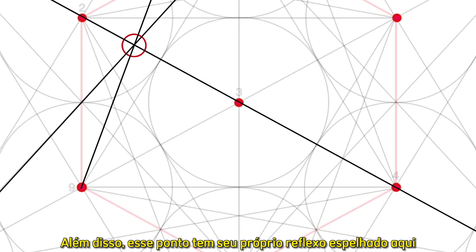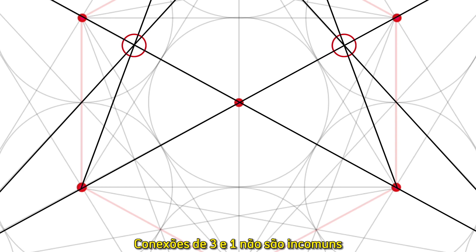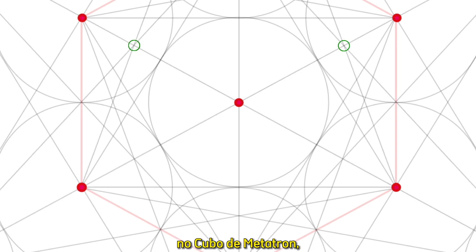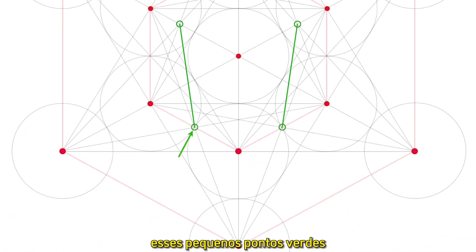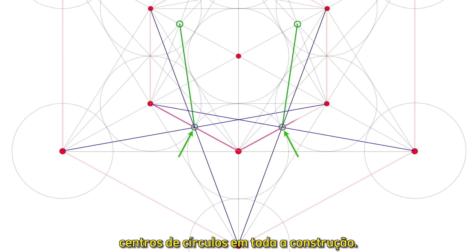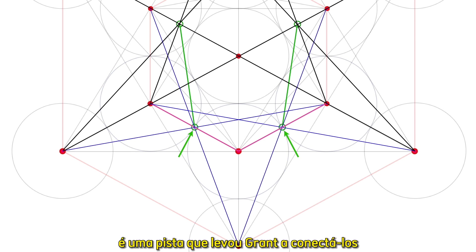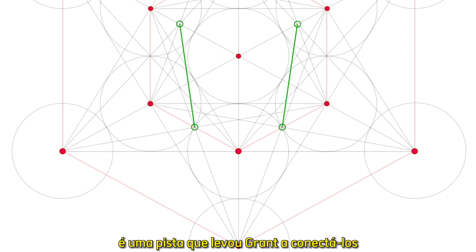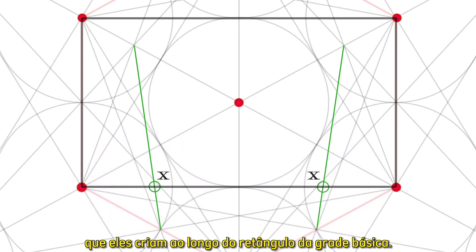Plus, it has its own mirror reflection here. Three-in-one connections are not uncommon in Metatron's cube, but by connecting with this particular mirror grouping down here, these small green points have now linked to every circle center in the entire construction. The fact that they also coincide with three circles tangent to each other is a clue that led Grant to connect them and investigate these two cross points they make along the basic grid rectangle.